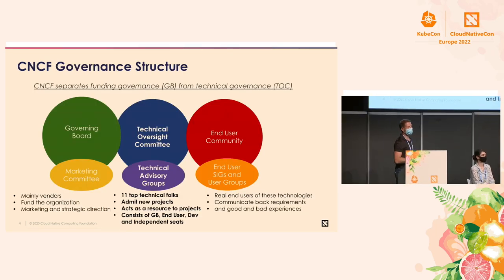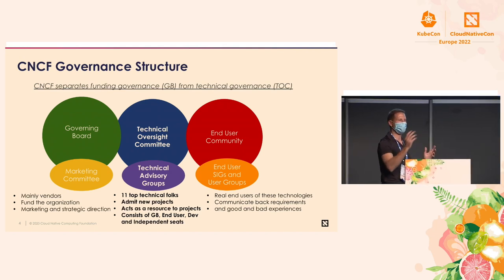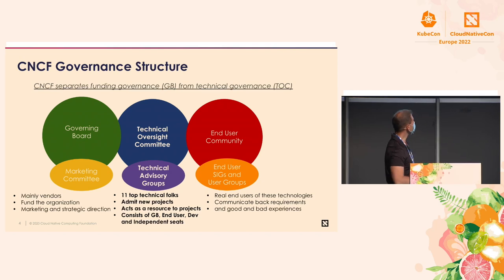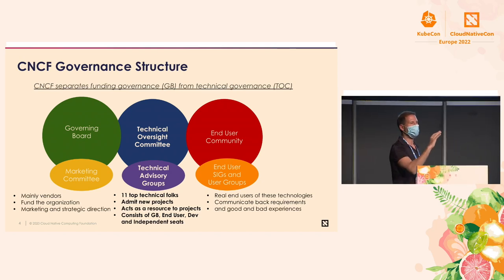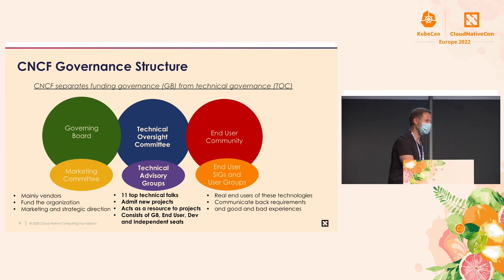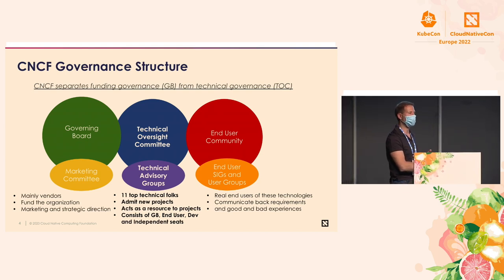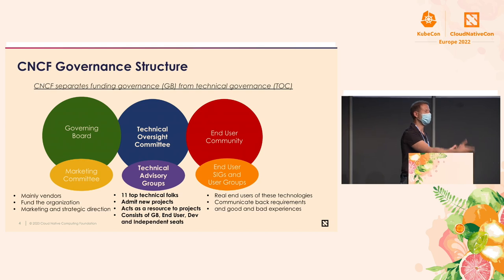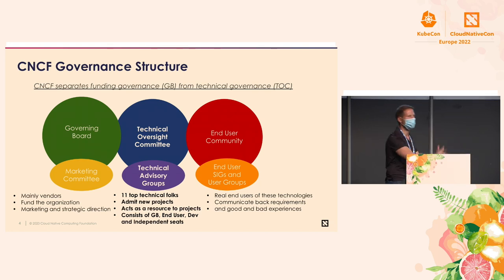The way CNCF is structured, if you're not familiar with open source foundations, there's generally a board of directors. The way it's done in CNCF is there are three main pillars. There is the governing board, which is kind of your boring business, budget kind of decision makers. These are generally the companies that pay to sustain the organization — your IBMs, Googles, Oracles, Apples of the world — and they get basically a vote on how budget is spent across the organization.